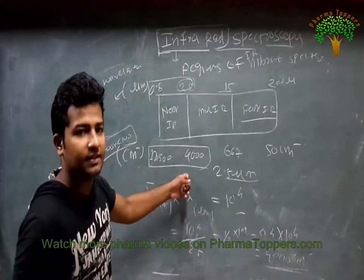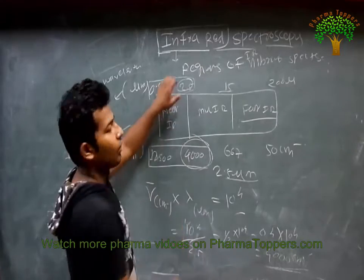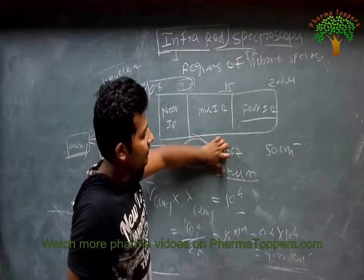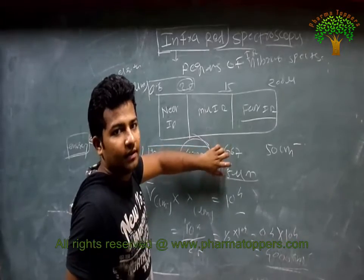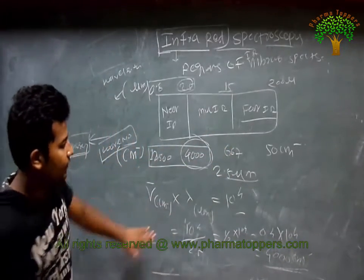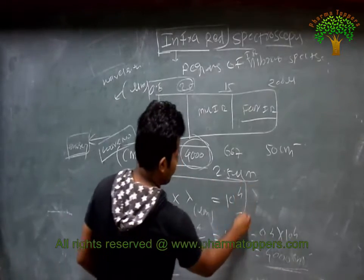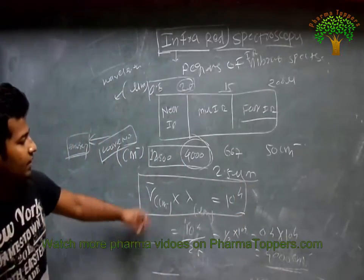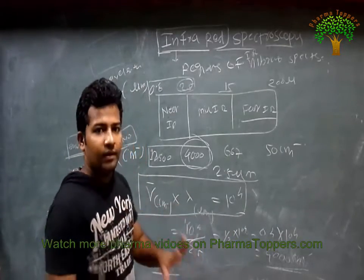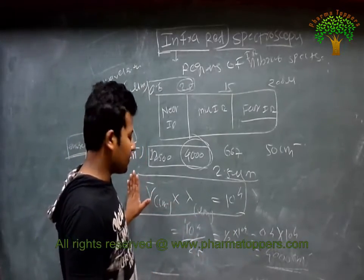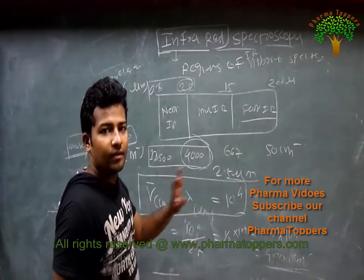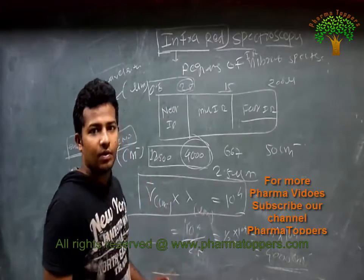These values are equivalent. If we calculate for 2.5 microns, we get 4000 cm⁻¹. Remember this simple formula: V̄ (cm⁻¹) × λ (micrometers) = 10⁴. If the wavenumber value is given, calculate for lambda; if the wavelength is given, calculate for the wavenumber.